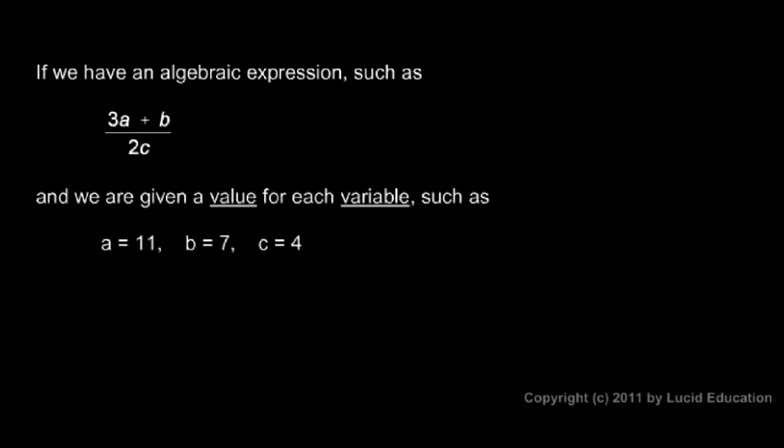We can evaluate this expression by simply rewriting it and replacing each variable with the appropriate number. And then we do the arithmetic and we get a value. That's why this is called evaluating the expression. It's said that an expression evaluates to a value or an expression has a value when we put in the numbers for these variables. So here's what I'm going to do in this space right here. I'm going to rewrite this expression. But instead of an a I'll write an 11. And instead of b I'll write a 7. And instead of c I'll write a 4.